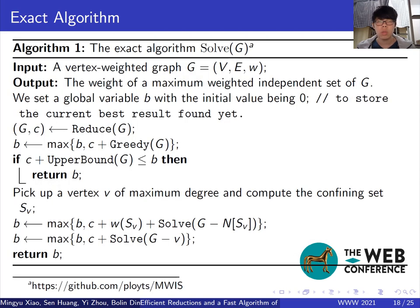We also design an exact algorithm. The algorithm uses a branch and reduce framework, where we do reductions and branching alternatively. You can see more details in the paper. The source code of the implementation is available on the website.